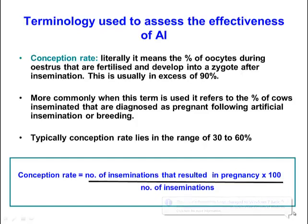We want to talk about some of the terminology used to assess the effectiveness of AI, which you'll read about in the literature. The first term is conception rate. Literally, this means the percentage of oocytes or eggs which during estrus would be fertilized and develop into a zygote after insemination. In a practical sense, if semen arrives at the right time and eggs are present, then fertilization rates can be in the order of 90%, so quite high.